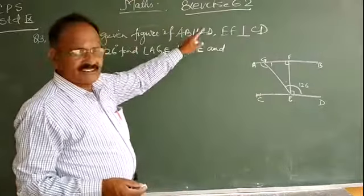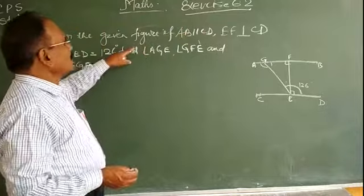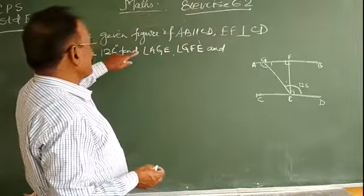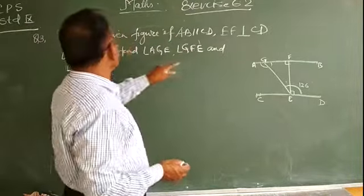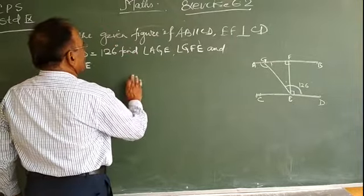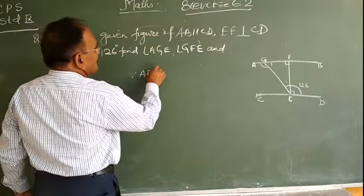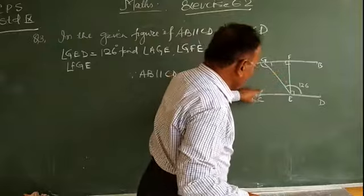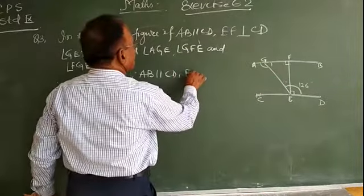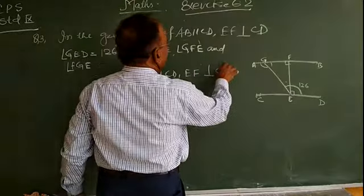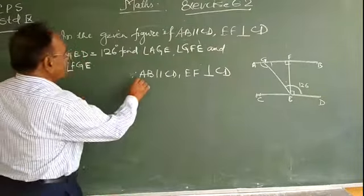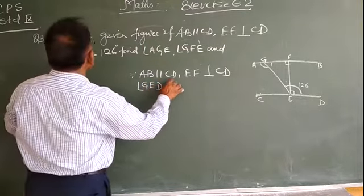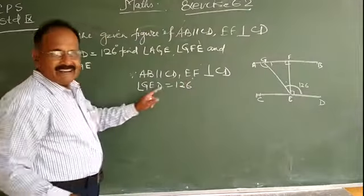This is the third question of Exercise 6.2. The figure is given on the blackboard. According to the question, AB is parallel to CD, EF is perpendicular to CD, BF is perpendicular to CD, and angle GED is equal to 126 degrees. This is the given information.